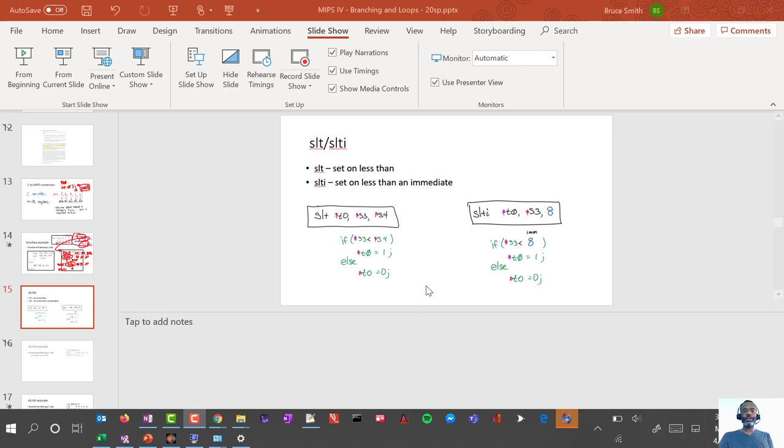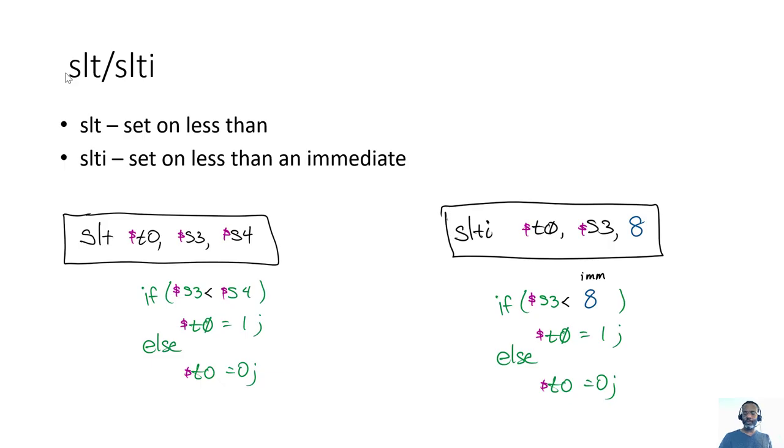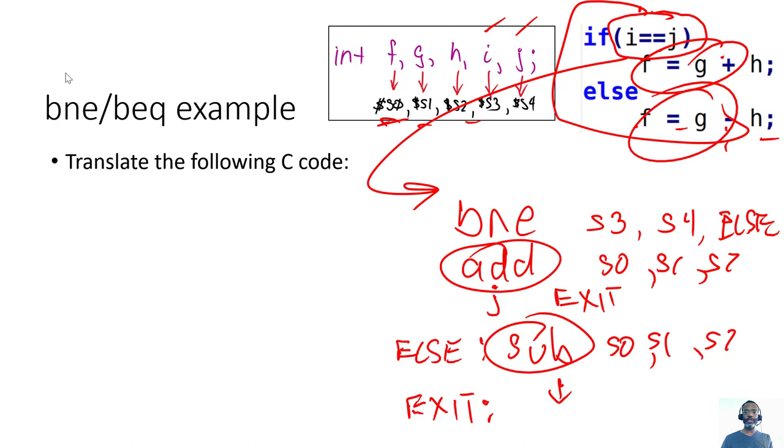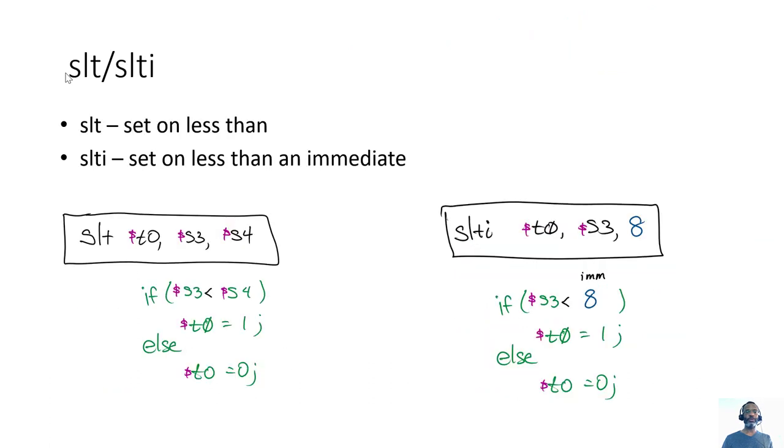Okay, so let's talk about testing for inequalities. We've just seen the branch if not equals statement or branch if equals, where we test for equality between registers.